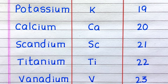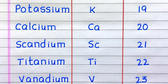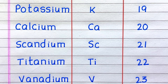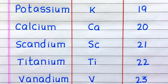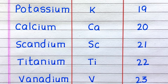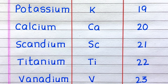The nineteenth element is Potassium, symbol K, atomic number 19. Twentieth, Calcium, Ca, 20. Twenty-first, Scandium, Sc, 21. Twenty-second, Titanium, Ti, 22. Twenty-third, Vanadium, V, 23.